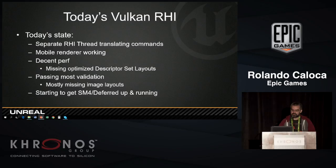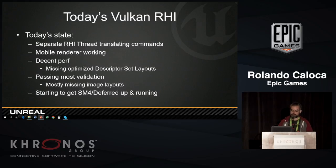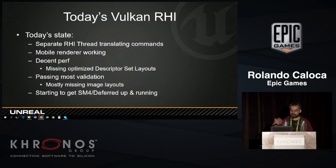So what's the state of today's Vulkan RHI on GitHub? We do have the RHI thread separately translating commands. We have the full mobile renderer working. We have some good performance — there's still some optimization to do, like optimizing how we describe the descriptor set layouts. We're passing most of the validation but missing some image layout transitions. Right now we're working on getting shader model 4 and then shader model 5, which includes compute.